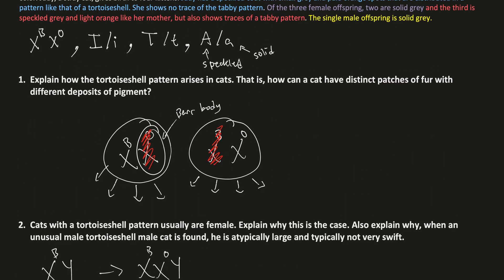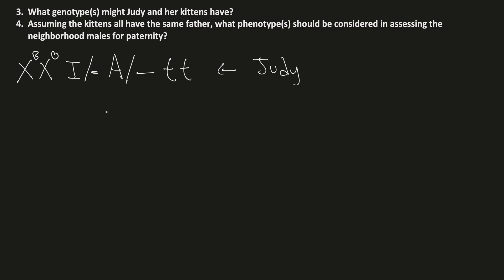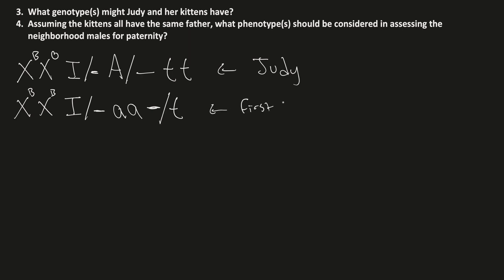For the two solid gray female offspring: they have no orange color, so they must be XB XB with two black alleles. It's solid gray, not solid black, meaning they have the big I allele. Since it's a solid color, they must be homozygous recessive at the A allele — little a little a. For tabby, we can't determine their genotype because the little a little a is epistatic to the tabby pattern. We know they have at least one little t from their mom, but don't know about the second allele. Furthermore, since these two females are little a little a, and they could only get one little a from their mother, Judy must be heterozygous for the A allele.